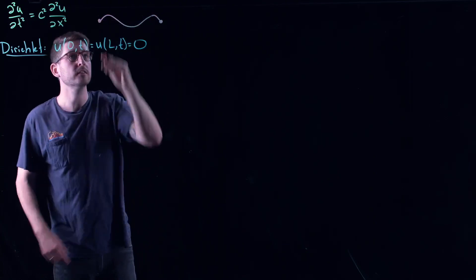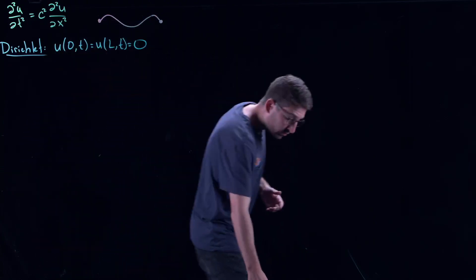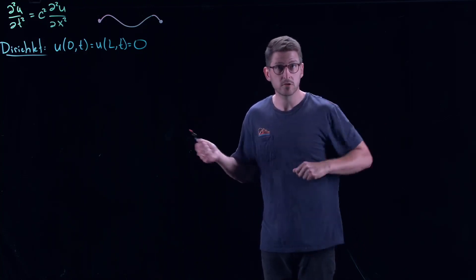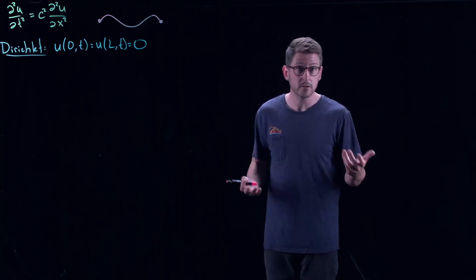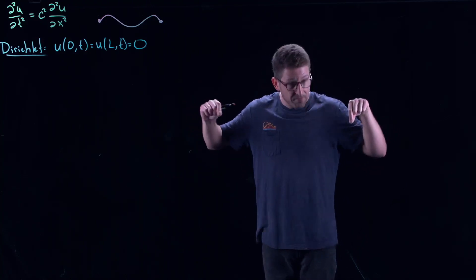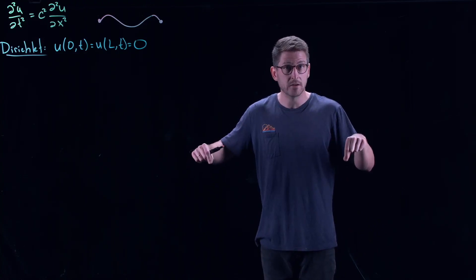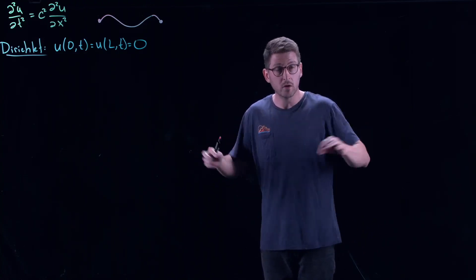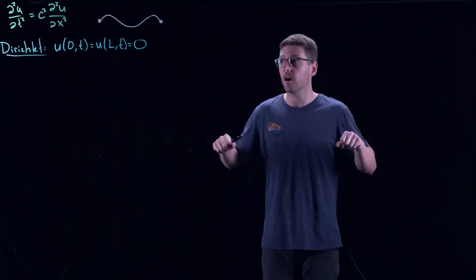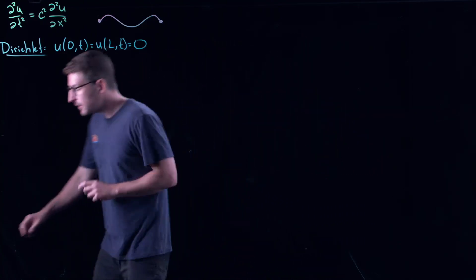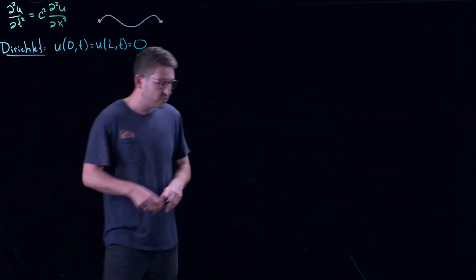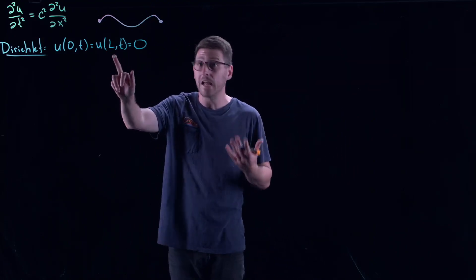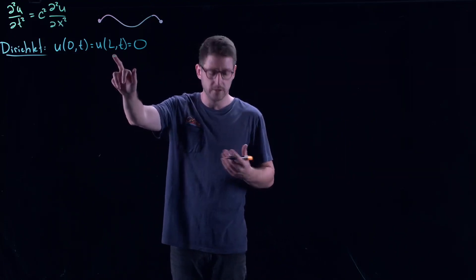This describes your typical stringed instrument. If you think about a guitar, piano strings, or a violin — any sort of stringed instrument — we fasten them down at either end. You pluck that string and allow it to wiggle, but the ends of it are stuck. Dirichlet boundary conditions, at least for a vibrating string, are really the most natural boundary conditions that one would put on this.